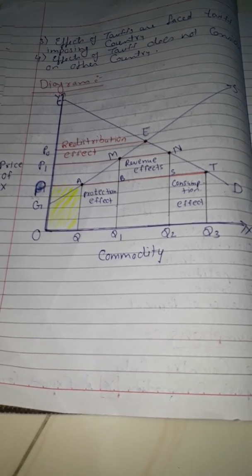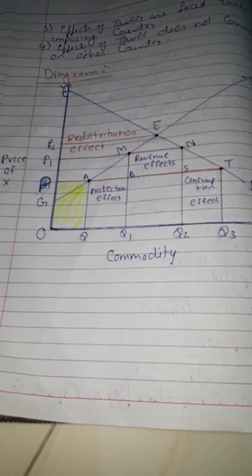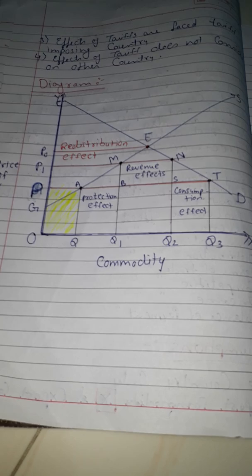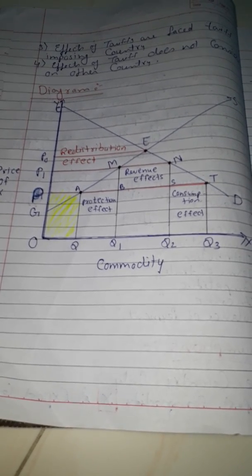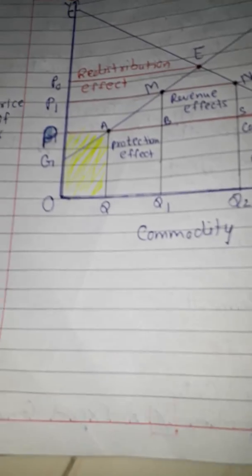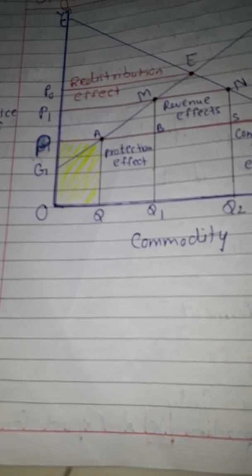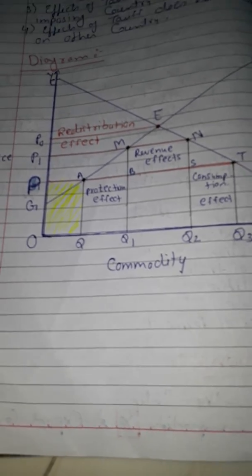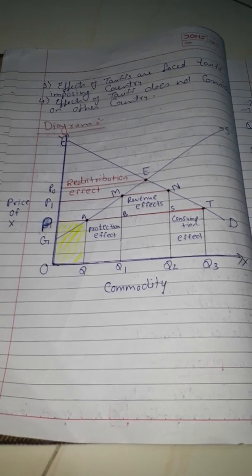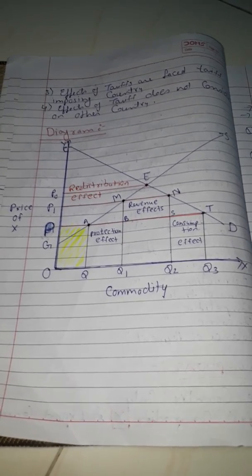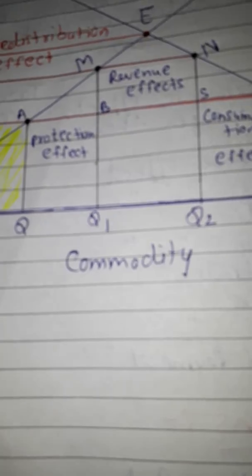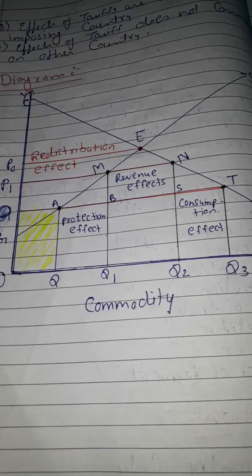After tariff imposition, at price OP1, demand falls to OQ2 and supply rises to OQ1. So we have protected the Q to Q1 portion of domestic production — this is called the protective effect. Before tariff we were demanding OQ3, now we are demanding OQ2, and we are producing OQ1 in our country. So now we are importing only Q1 to Q2.